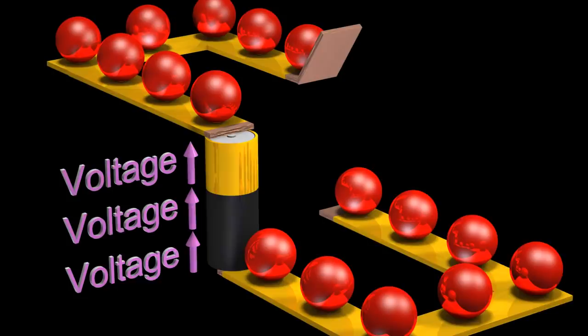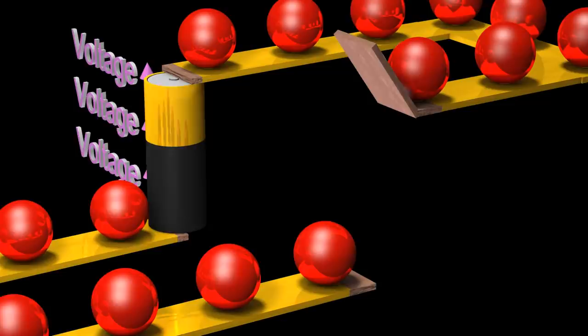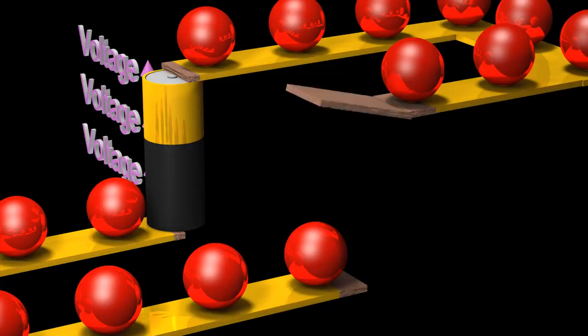A voltage source always maintains a constant specified voltage difference across its terminals. A short circuit is an electrical connection between two points, forcing the two points to be at the same voltage.